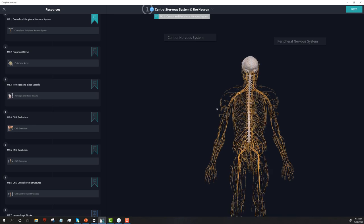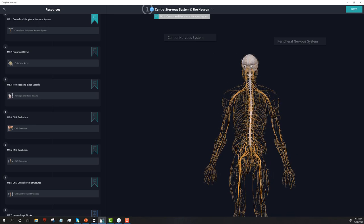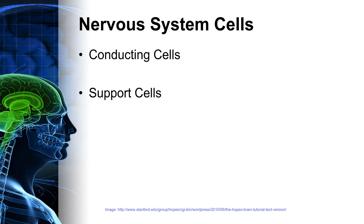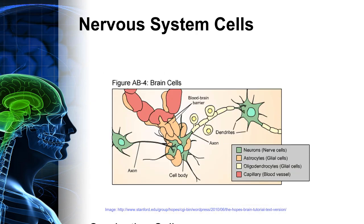The nervous system is broken into two different major structures at the microscopic level. We have cells that do the actual work — conducting nerve impulses between groups of nerves to result in things like movement, thought, and emotions. Then there are support cells called the glia. Neurons are the only nerve-conducting cells; everything else — the astrocytes, oligodendrocytes, and capillary cells — are support cells.